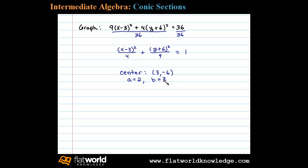And so since B is greater than a, this will be a vertical ellipse. And so to graph this we'll start with the center here at 3 comma negative 6.